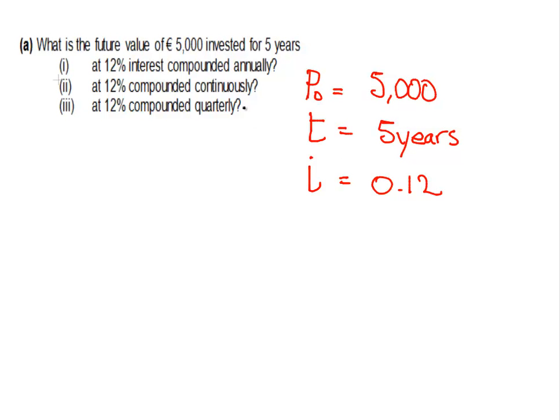So the first thing we're asked to do is find out what is the future value of 5,000 invested for 5 years when we are at 12% compounded annually. So the formula we're going to use in this case is very straightforward. The future value, Pt, is equal to P0, the present value, by the interest rate 1 plus i to the power of t. So let's work this out.